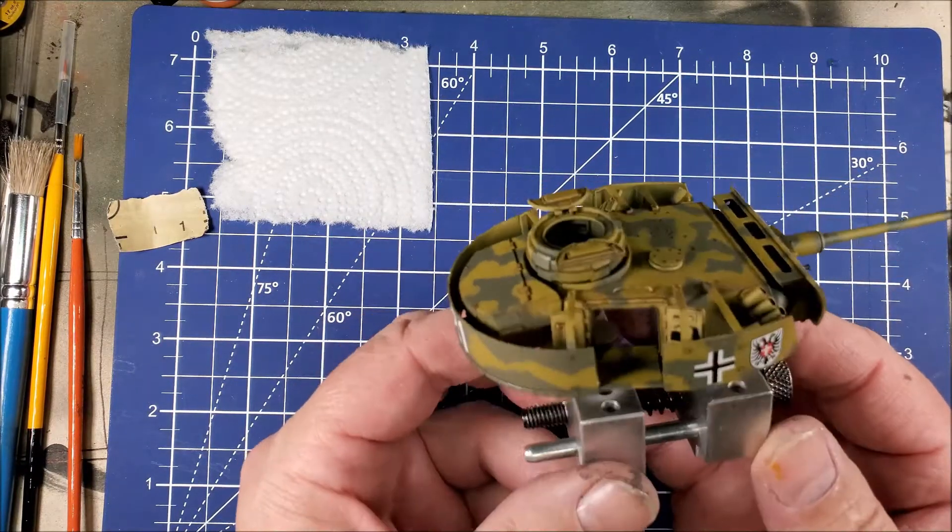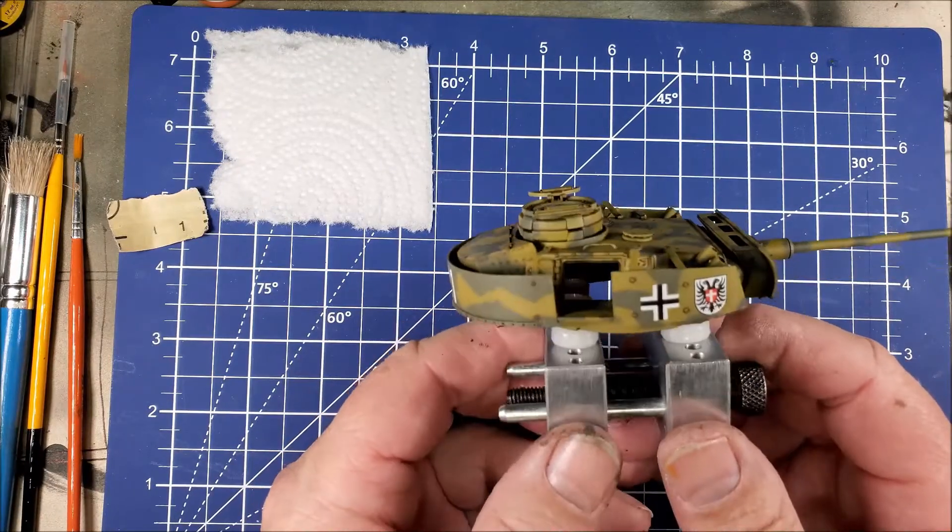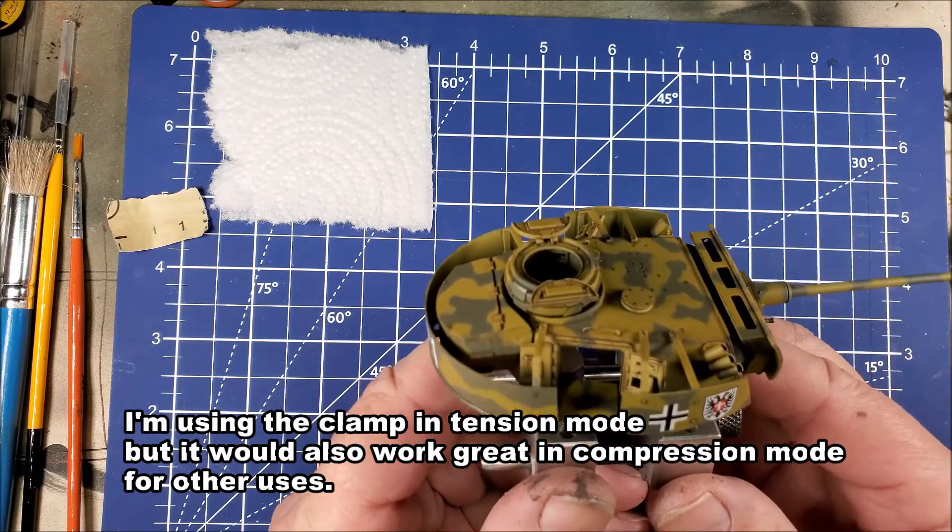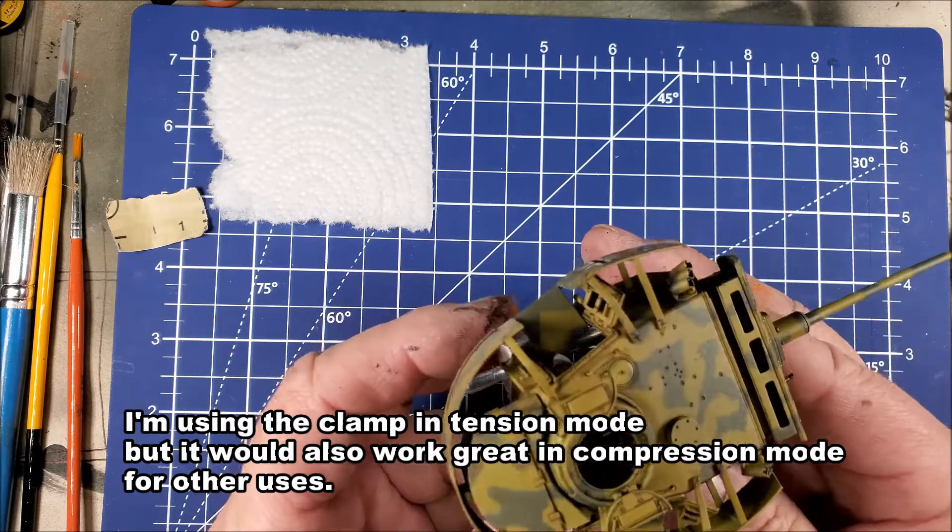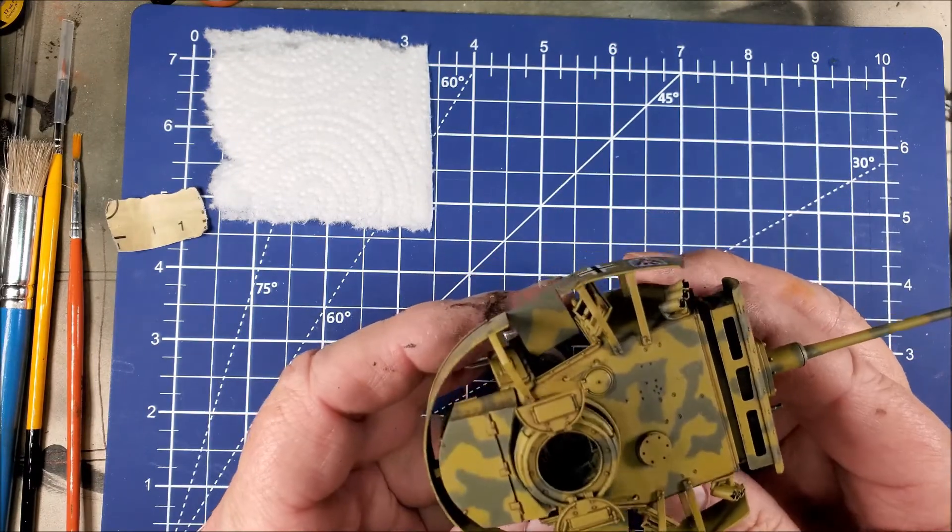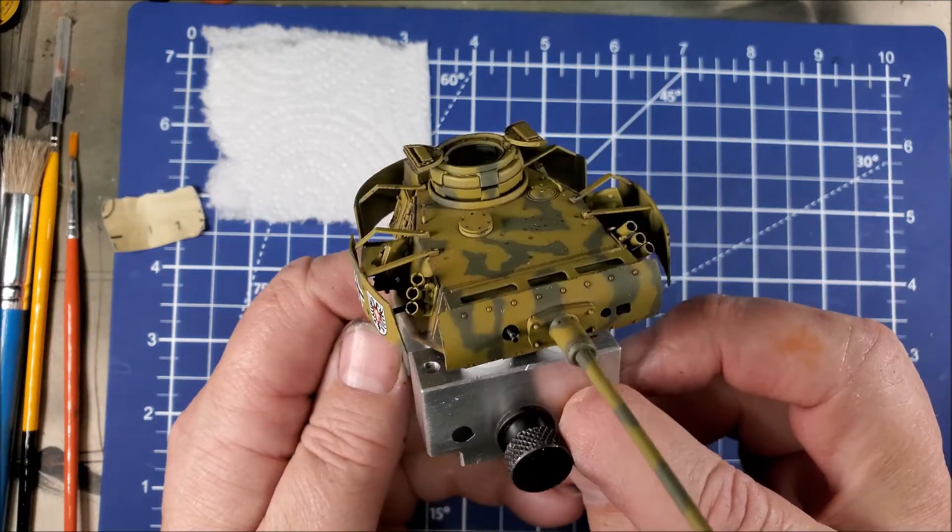So you can see now I have a tool for working on the turret. And this might come in handy—well, it will come in handy for applying oils, streaking, pin wash, you name it. It'll be very handy for working on turrets and that's why I bought it.